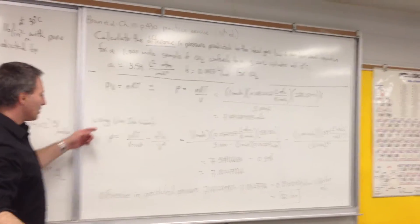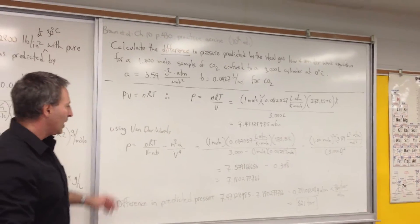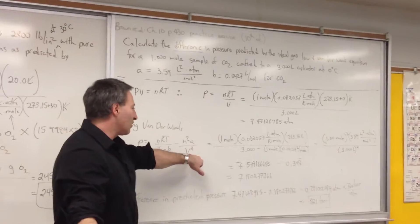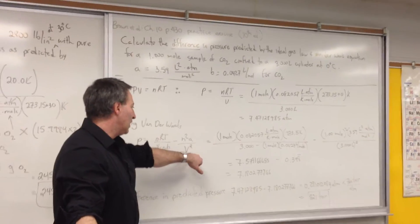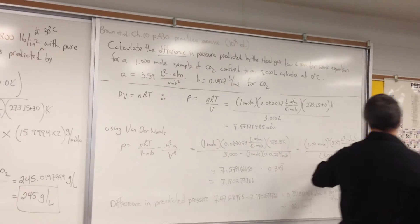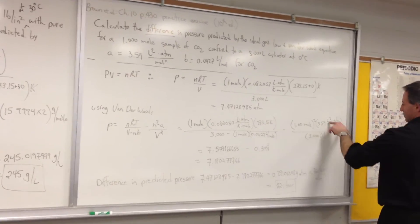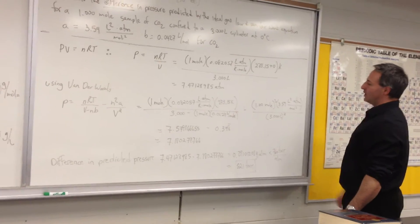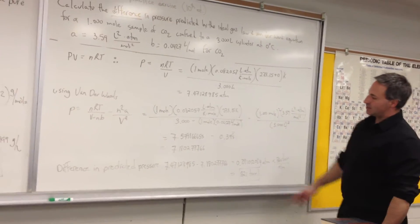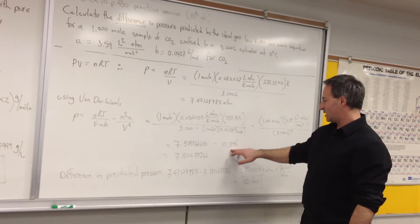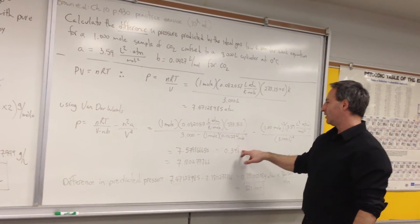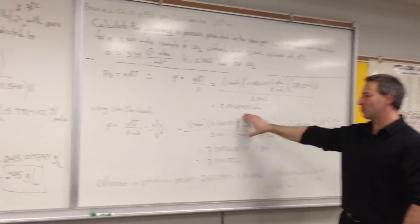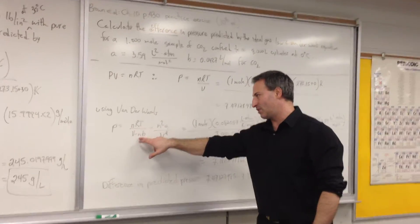Doing the same calculation using the Van der Waals equation, we enter all the values again. Notice that B is here and A is there. Don't forget the square and the volume in the second term. So this becomes 9 liters squared, which cancels with the liters squared of the value for A. The result is 7.579 minus 0.398 recurring. So this term accounts for the decrease in volume due to the fact that the gas does have a finite volume.